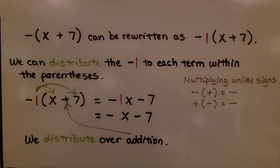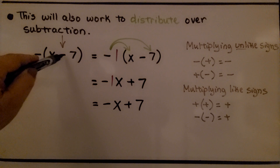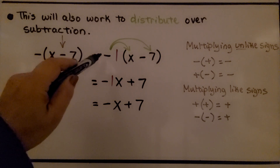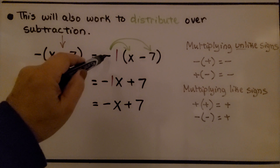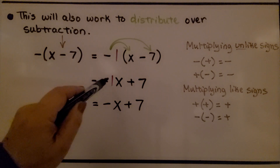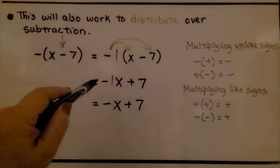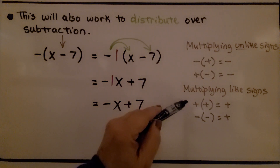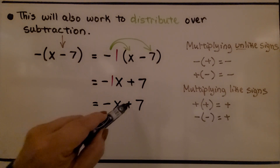This also works to distribute over subtraction. We have a negative and, inside parentheses, x minus 7. We rewrite this as negative 1 multiplied by x minus 7. Distributing: negative 1 times x gives negative 1x, and negative 1 times negative 7 — like signs — gives a positive 7. We don't need to write the 1, so we have negative x plus 7.